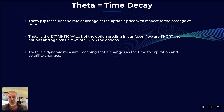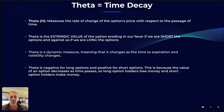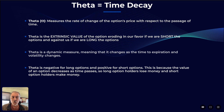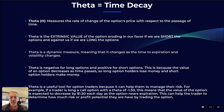Theta is a dynamic measure, meaning it changes as time to expiration and volatility change. Theta is negative for long options and positive for short options. This is because the value of an option decreases as time passes, so long option holders are going to lose money as time decays. If I'm a short options holder, I'm going to be making money as time decays.